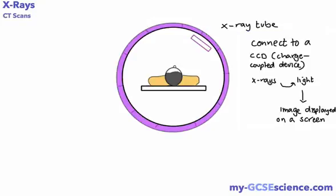What we can do next is connect it to something that we call a charge-coupled device, and this basically converts the x-rays into light so that we can produce a digital image on a screen of what we see.